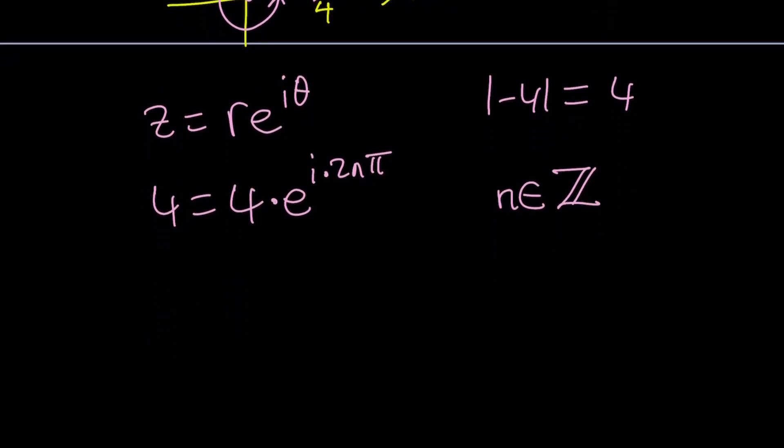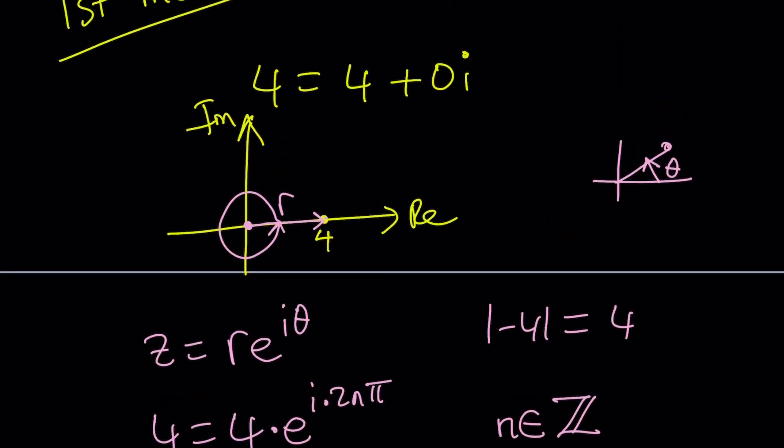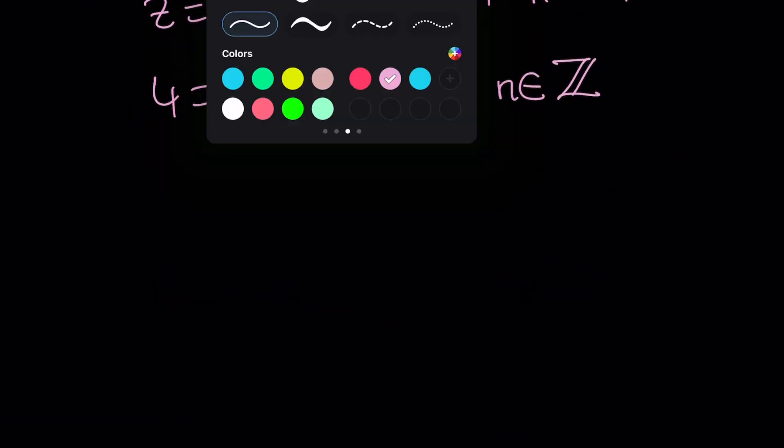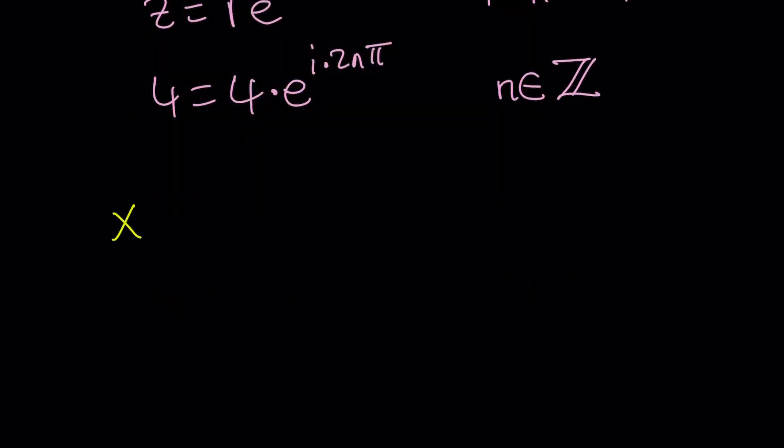We're going to write it as 2n pi where n is an integer. Obviously, this explains why there are infinitely many representations of the number 4 as a polar complex number. So now, we're ready to rock and roll. Let's get to work. So what was our equation? x squared equals 4. It kind of looks obvious, doesn't it? But let's do the non-obvious. x squared equals 4. I'm going to replace the 4 with x squared equals 4 times e to the power 2n pi i.